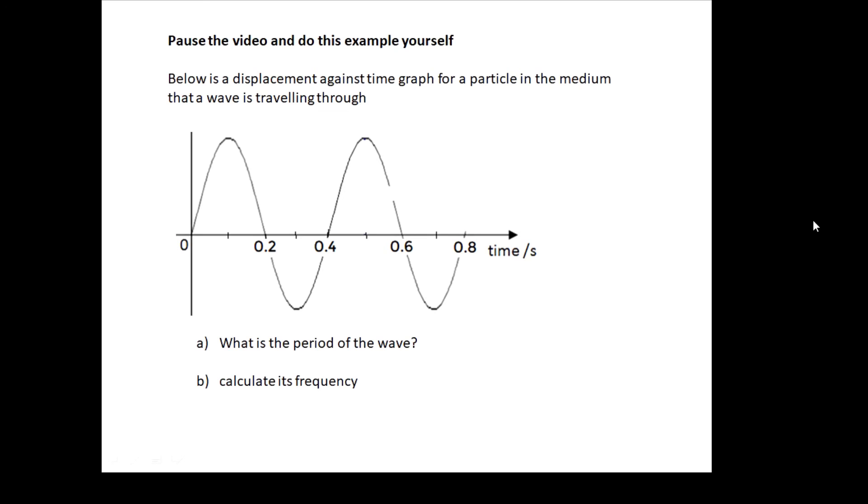Now, on all of these videos, I'm going to give you a few examples for you to do. And what I'd like you to do is to pause the video and do it yourself. So pause the video now and do this for yourself. I'll put the answer up in about 3 seconds. And here's the answer. So the period we read off the graph is 0.4 seconds. And the frequency is 1 over the period. And that's 2.5 hertz. Thank you.